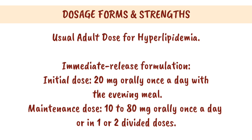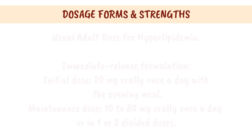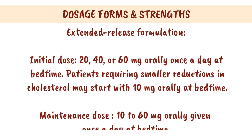Dosage forms and strengths — Usual adult dose for hyperlipidemia, Immediate Release formulation: Initial dose, 20 mg orally once a day with the evening meal. Maintenance dose, 10–80 mg orally once a day or in one or two divided doses.